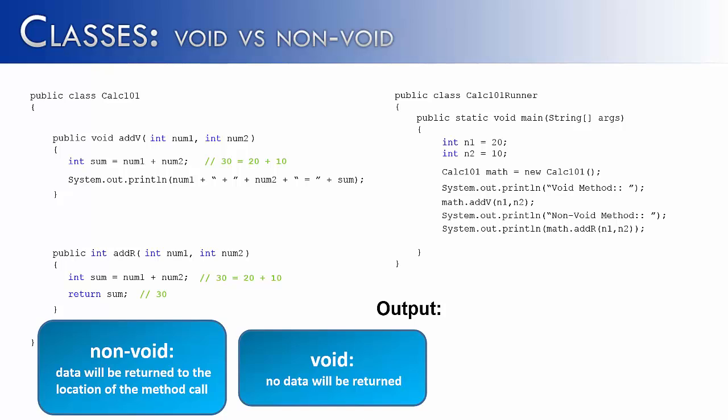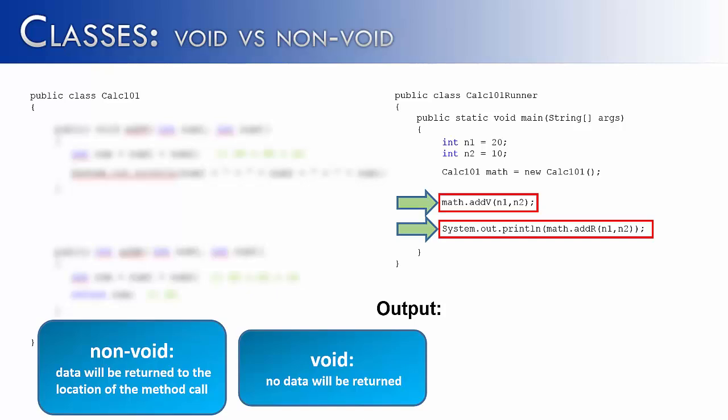Let's examine these method calls a little bit closer to see if we can determine if there's a difference between calling a void and a non-void method. So I've blurred out their implementation, and I've highlighted their calls inside of the main method. You can see that math.addV is the void method, and math.addR is the return method. You can also see that the void method is standing by itself, or standing alone, and the non-void method addR is inside of a programming statement. Let's focus on addV, our void method, and then come back and focus on addR, our non-void method.